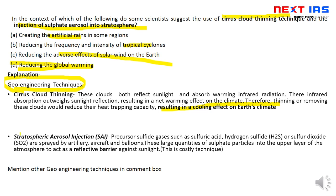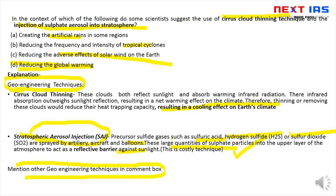Stratospheric aerosol injection में: precursor sulfide gases जैसे sulfuric acid, hydrogen sulfide, और sulfur dioxide के particles को aircraft या balloon से spray किया जाता है। ये reflective barrier का काम करते हैं sunlight के लिए। Problem यह है कि यह काफी costly technique है। But आपको पता होना चाहिए ये techniques exist करती हैं। Comment box में बताएं — और कौन-कौन सी geoengineering techniques आपको पता हैं।